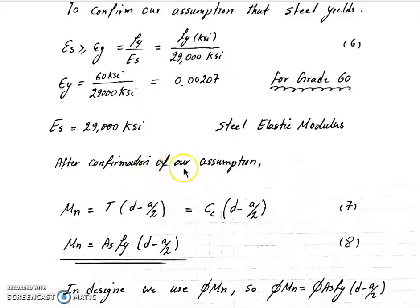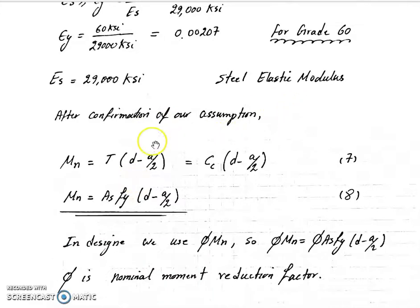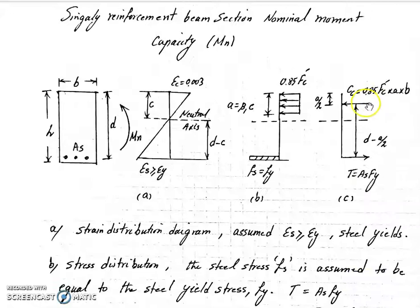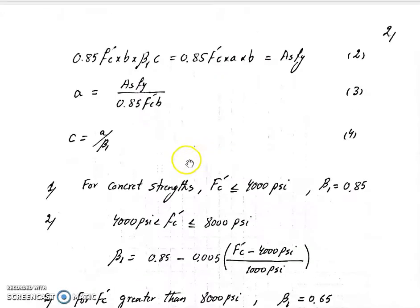After confirmation of our assumption, we can find the Mn. Mn is T multiplied by d minus a over 2 if we take moment from the center of the compression force.